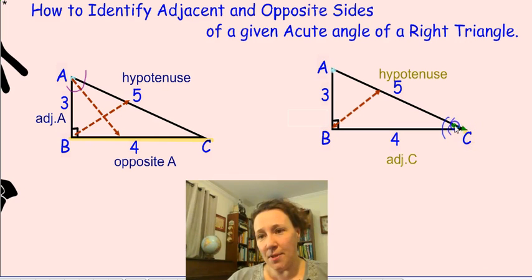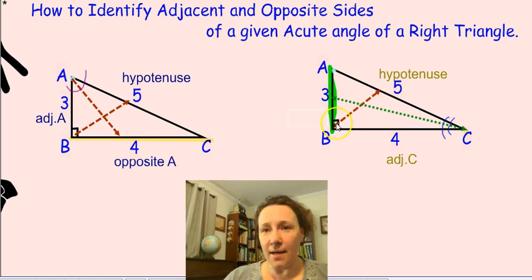that right opposite to angle C there lies side AB. I highlighted it so it's easier for you to see that vertex C does not lie on that side, does not touch it in any way, and therefore it only makes sense that we name AB in reference to angle C as the side opposite angle C. That's all.